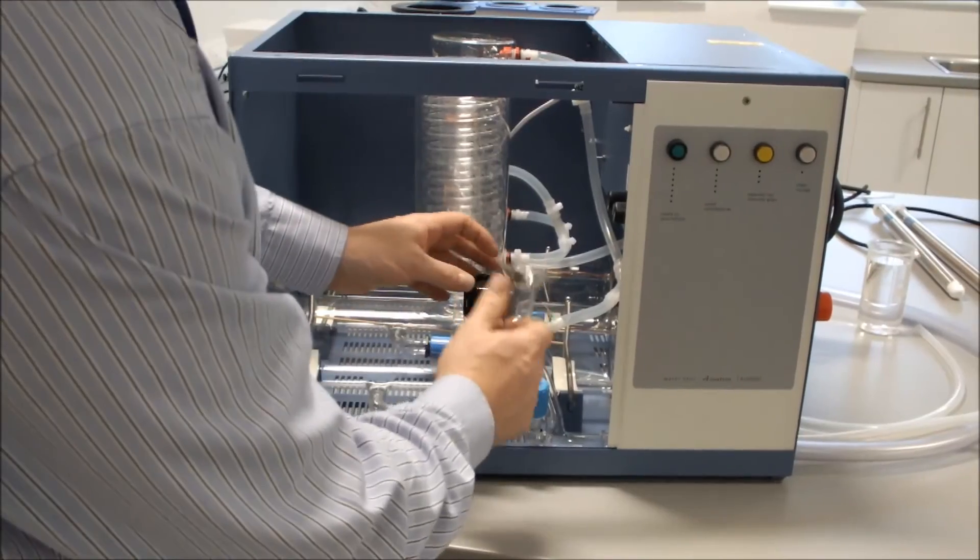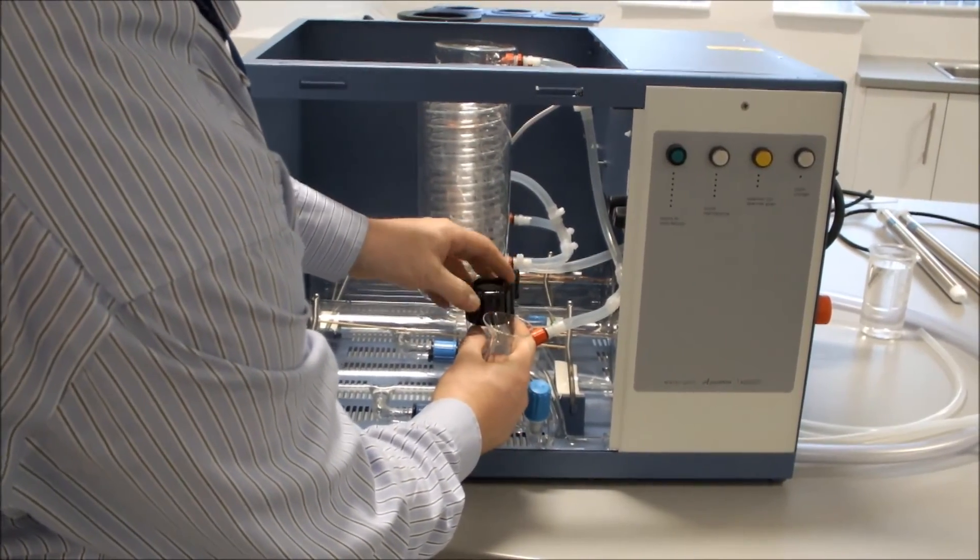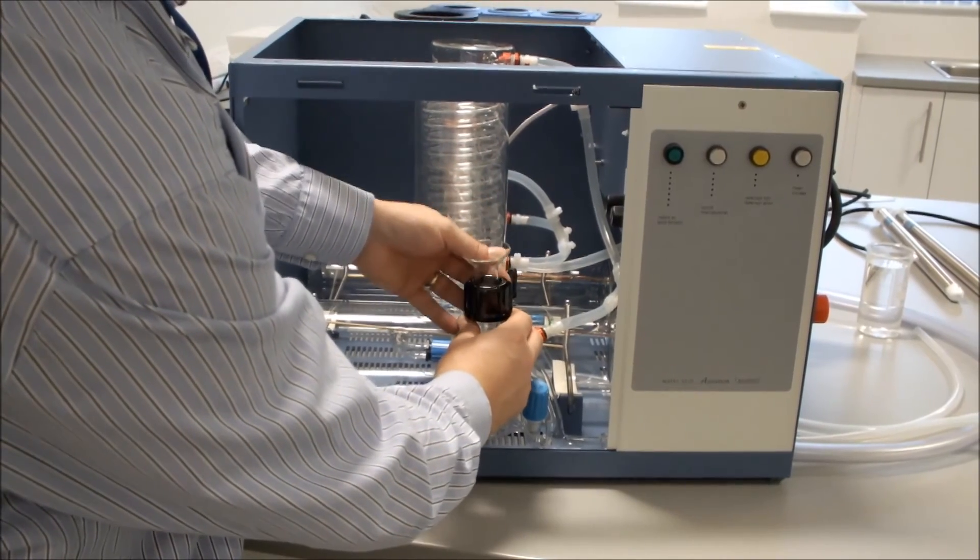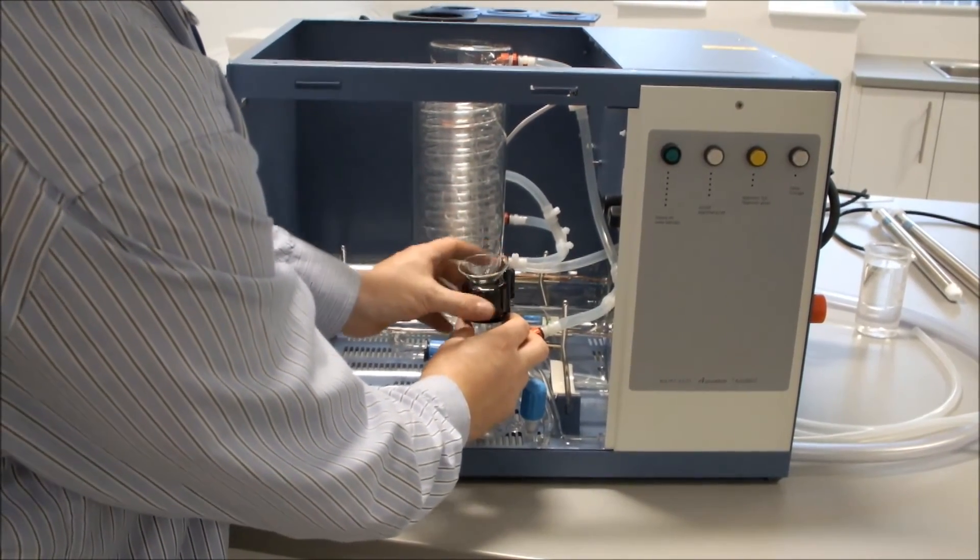We then connect our funnel into our front boiler level control. Undo the black cap, fit the funnel and just tighten it.